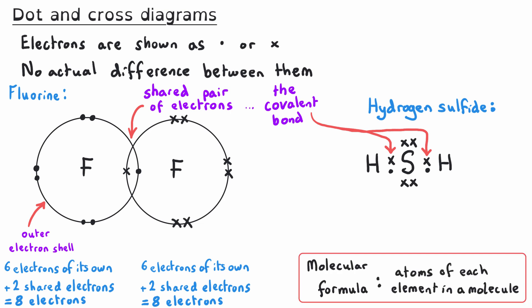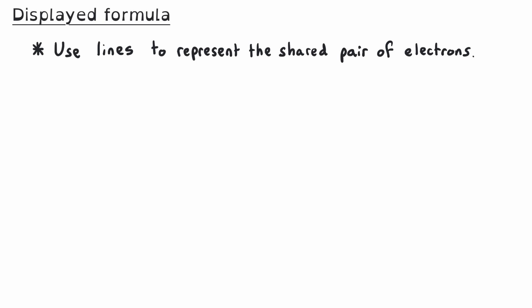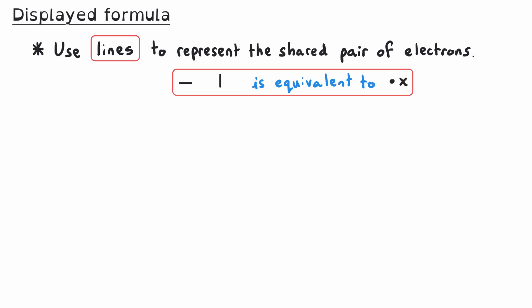We can also use dot and cross diagrams to deduce the formula of a molecule. For instance, in the fluorine diagram we have two atoms of fluorine, so the formula is simply F2 — a little subscript 2 after an element's symbol shows we have multiples of that element. Hydrogen sulfide has one sulfur and two hydrogen atoms, so its molecular formula is H2S.